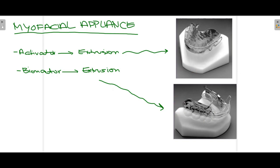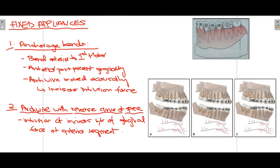Moving on to fixed appliances — the first is anchorage bends. In this appliance, mesial to the molar tube there is a bend that moves in a gingival direction anteriorly. When the arch wire is moved occlusally, an intrusive force is applied gingivally on the incisor teeth. The basic purpose of anchorage bends is therefore incisor intrusion.